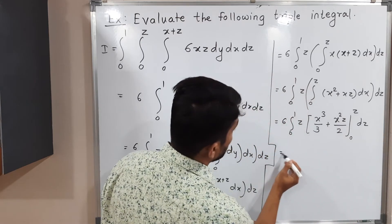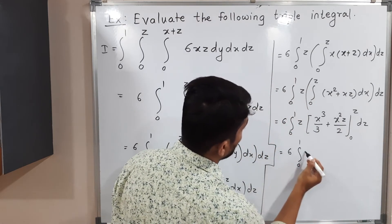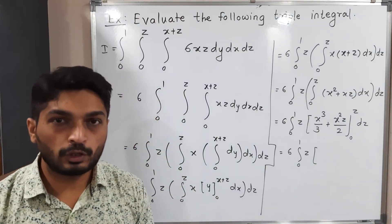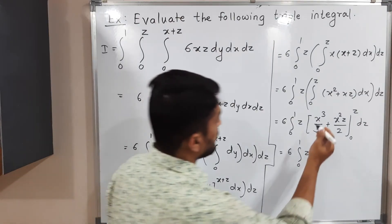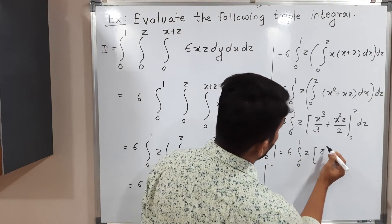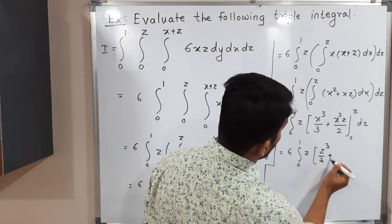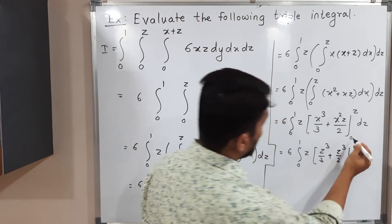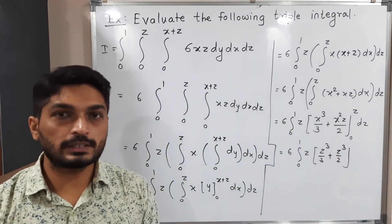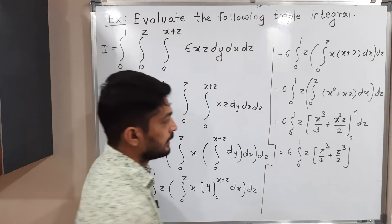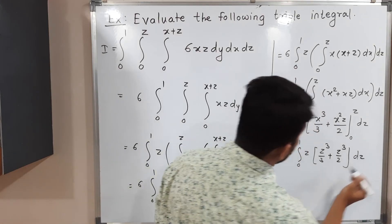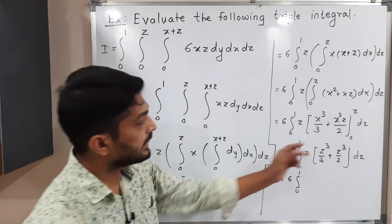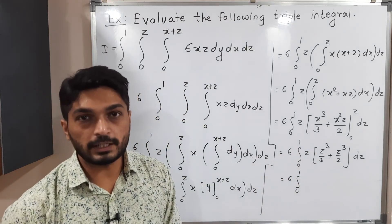This equals 6 integration 0 to 1. Now we put the upper limit z in place of x: we get z cubed by 3 plus z squared times z, which is z cubed by 2. The lower limit 0 gives 0, so we ignore it. We then have 6 integration 0 to 1 — and we can take z cubed as a common factor — giving z cubed times (1/3 plus 1/2) dz.